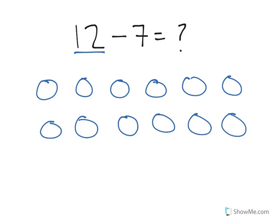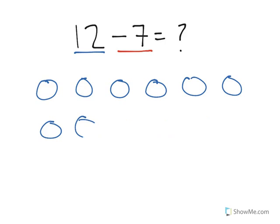And then what happens? Well, you subtract 7. So that means 7 go away. So we're going to subtract from the 12 we started with: 1, 2, 3, 4, 5, 6, 7.